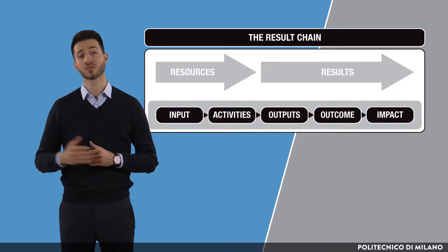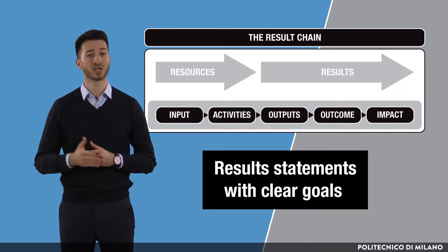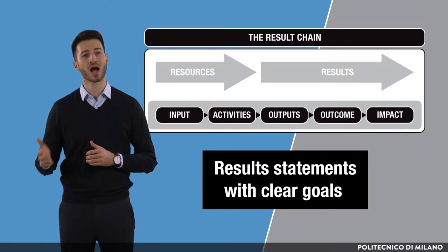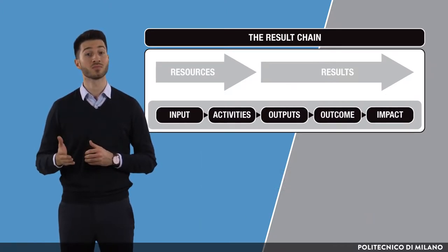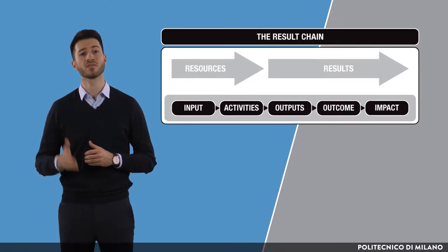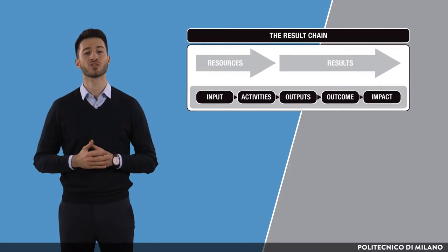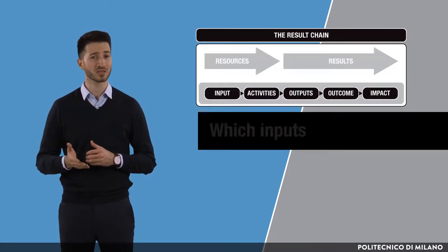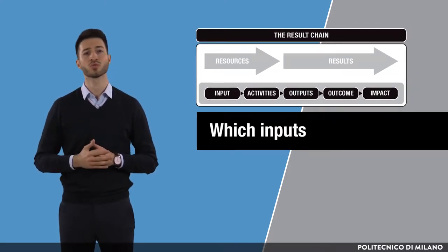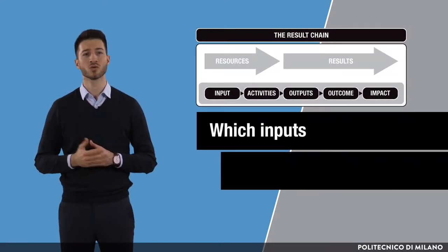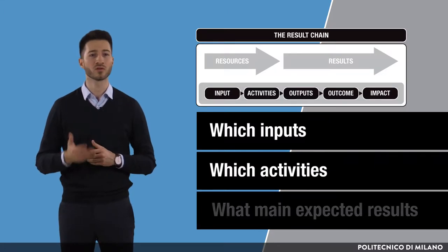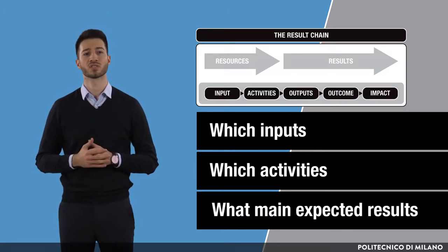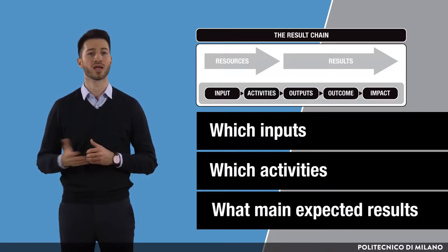For each of the segments of the result chain, one should define result statements with clear goals as well as how every statement should be measured. Result statements distinctly define each stage of the result chain — for instance, which inputs will be utilized, which activities will be carried out, what are the main expected results of the program, and so on.